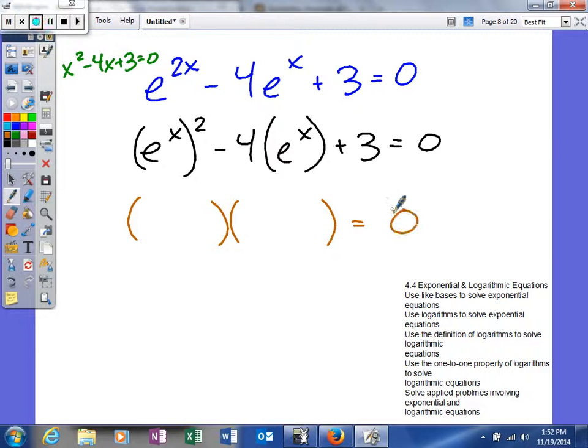In fact, with a constant, I'll do the same thing. Two things that will multiply to give me a positive 3, that will add to give me a negative 4. So negative 1 and negative 3 should do the trick.